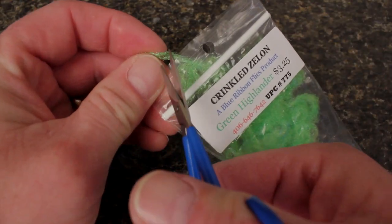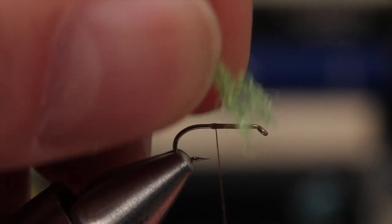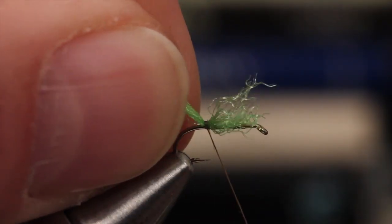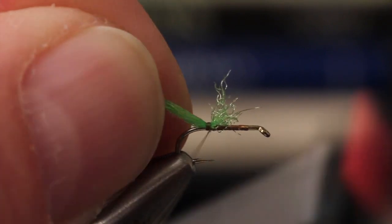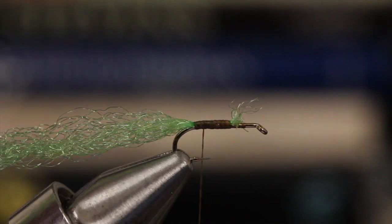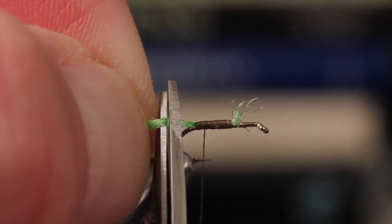Matt uses crinkled green Zeylon to imitate the egg sac of a female granum about to deposit her eggs. If you want to tie a male, go without it. Tie the Zeylon in and wrap over the butt ends to form the underbody. Snip the trailing Zeylon off close to resemble the egg sac.